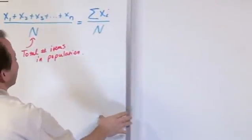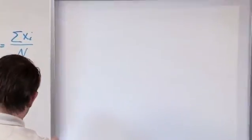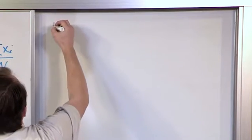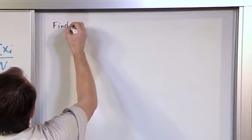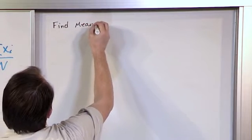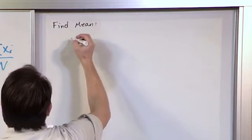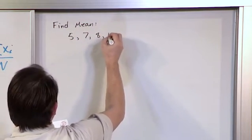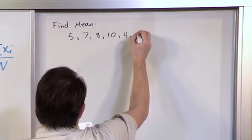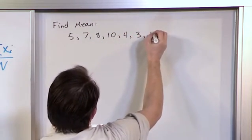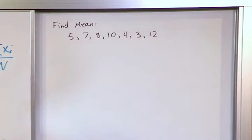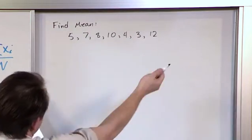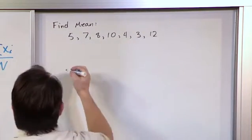So what I'm going to do is slide this board over, and what we want to do is find — to practice here — the mean of the following data: 5, 7, 8, 10, 4, 3, 12. And so we want to find the mean of this. And these are presumably samples, right? Because it's a very small amount here.